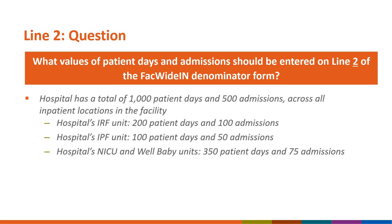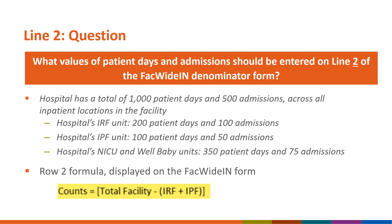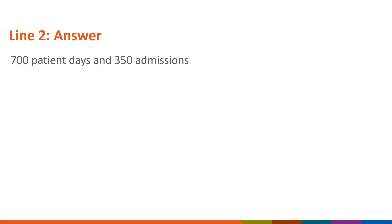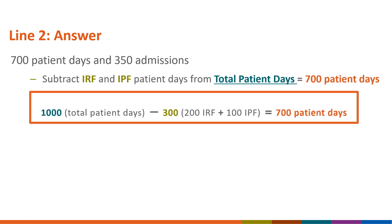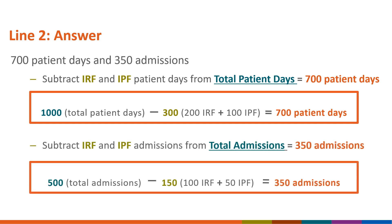What values of patient days and admissions should the facility enter on line 2 of the FACWIDEIN denominator form? The formula for calculating line 2 denominators is shown on the screen highlighted in yellow. The correct answer is 700 patient days and 350 admissions. The 1000 total patient days were subtracted by the combined totals of IRF and IPF patient days to equal 700 patient days. The 500 total admissions were also subtracted by the combined totals of IRF and IPF admissions to equal 350 admissions.